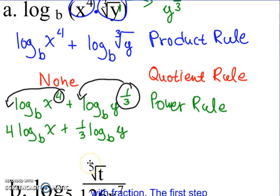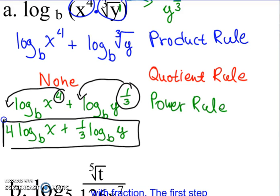That's our final answer. There's nothing we can put in the calculator because there are variables inside all of it. To recap: we did the product rule where there was multiplication — gave each part a log with addition in the middle; no division so we skipped the quotient rule; then the power rule converted the radical to a fraction exponent and moved all exponents to the front.